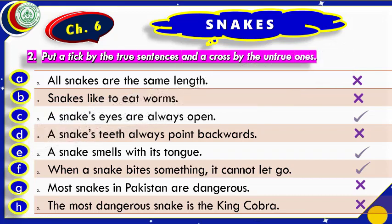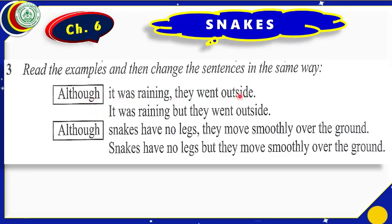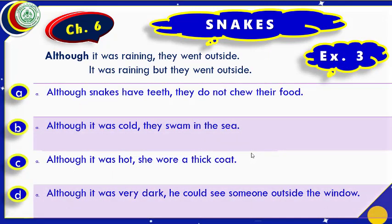We have finished that exercise. Let us move to exercise 3. The instructions say: 'Read the examples and then change the sentences in the same way.' The given sentence is: 'Although it was raining, they went outside.' In our answer we shall not write 'although.' We shall write the first part directly — 'It was raining' — then instead of a comma we write 'but,' then the second sentence. The same rule applies to the second example. We shall write our answers in the same way.